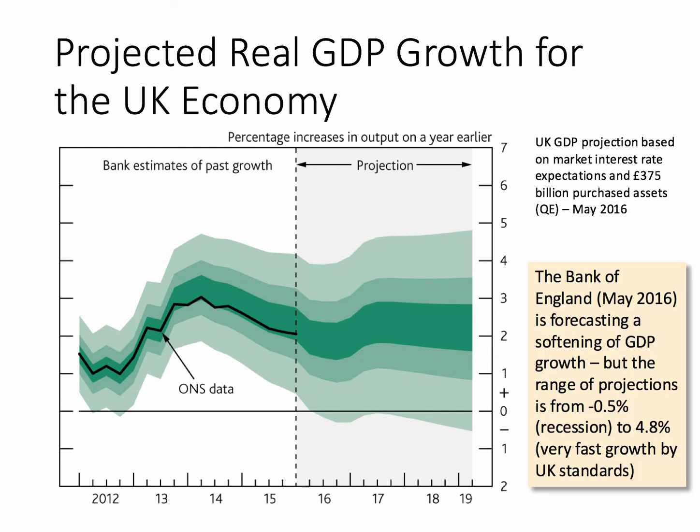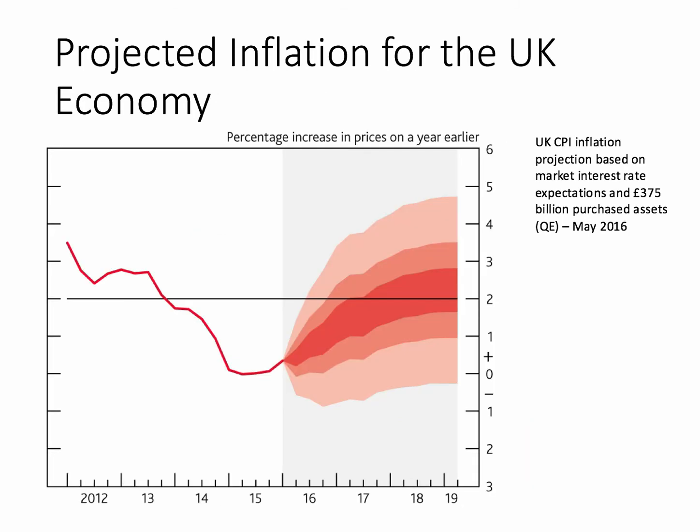So a softening of growth — the range of growth could be nearly 5% GDP growth, or it could be down below zero, though it's more likely to be between one and three percent. Likewise with inflation: the Bank of England is forecasting that inflation will pick up back towards the 2% target over the next two to three years. It could stay very low, it could dip below zero into deflation, or on the other hand we could have inflation of three to four percent. So much depends on global external factors.